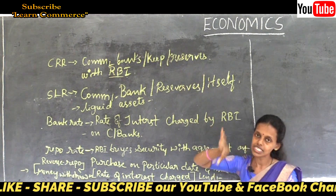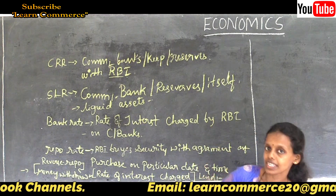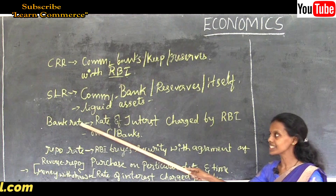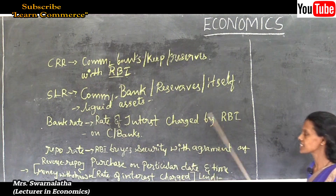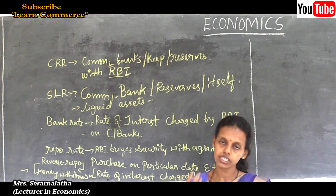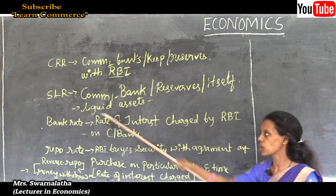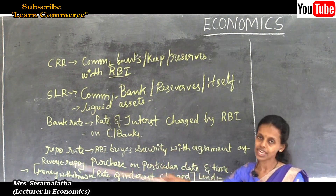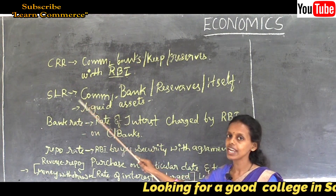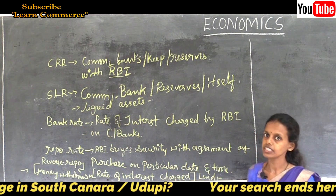When a bank keeps money with the RBI, RBI charges some rate of interest, which is called the bank rate. Bank rate is nothing but the rate of interest charged by the RBI on all other commercial banks — the rate at which RBI lends money to commercial banks.